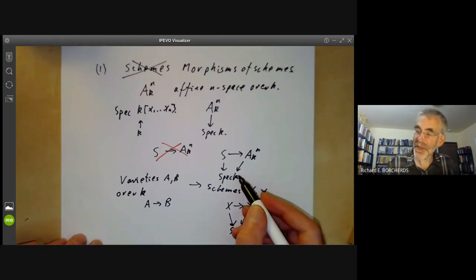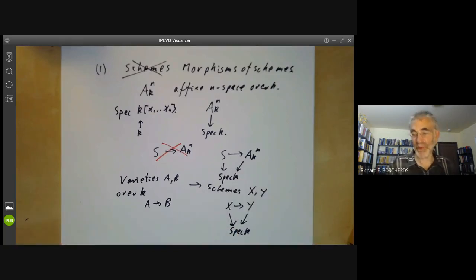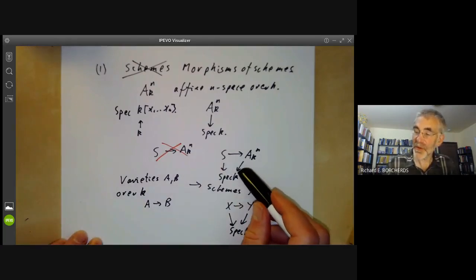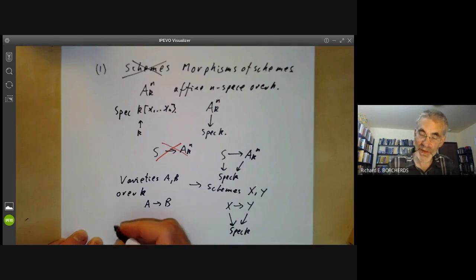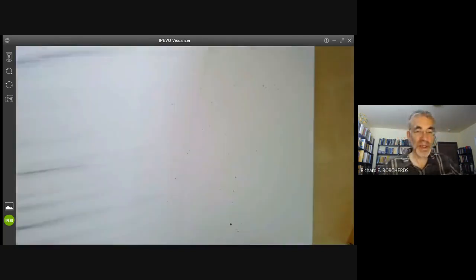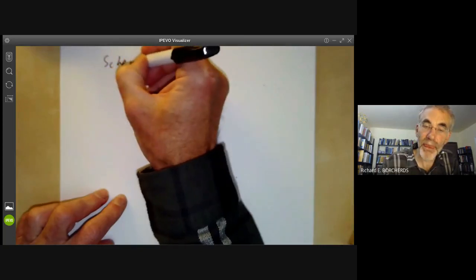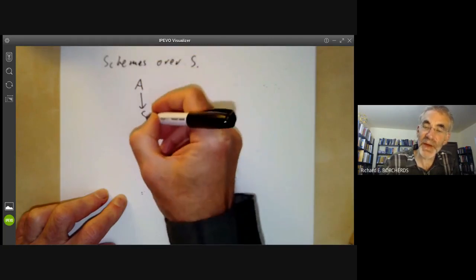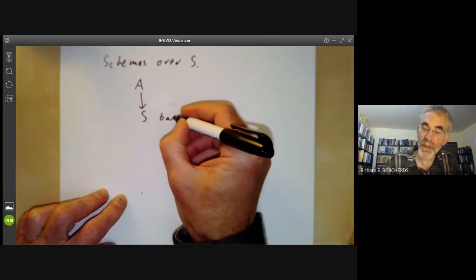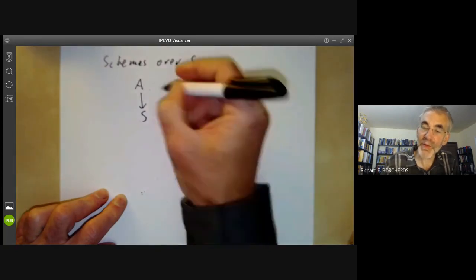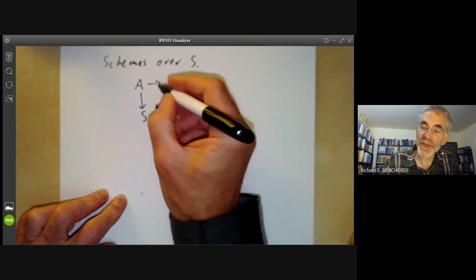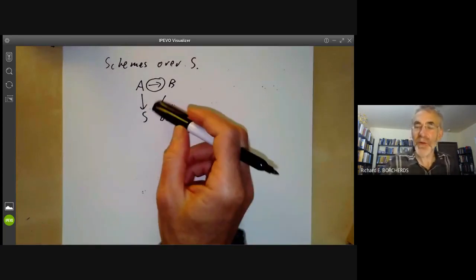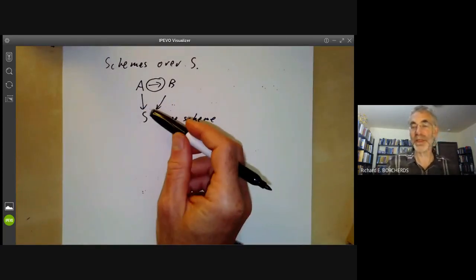One advantage: if you're just doing this over a field, this doesn't make that much of a big difference. But you can replace the base by any base scheme S whatsoever. So instead of looking at the category of schemes, we can look at schemes over S — meaning schemes together with a fixed morphism to the base scheme S. A morphism of schemes over S is just a morphism from A to B that makes this diagram commute. This is actually a very general construction you can do in any category whatsoever.